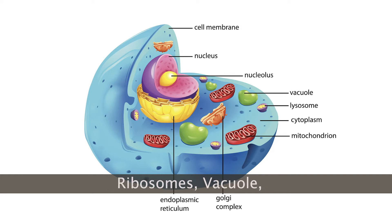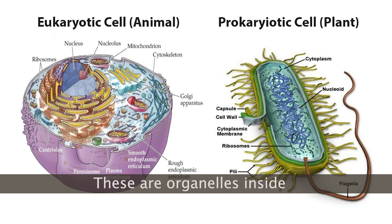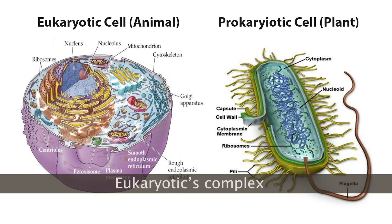Cells, the nation of all life, are filled with cytoplasm. Ribosomes, vacuoles, and a nucleus has them. These are organelles inside the membrane that it's got. Eukaryotic's complex while prokaryotic's not.